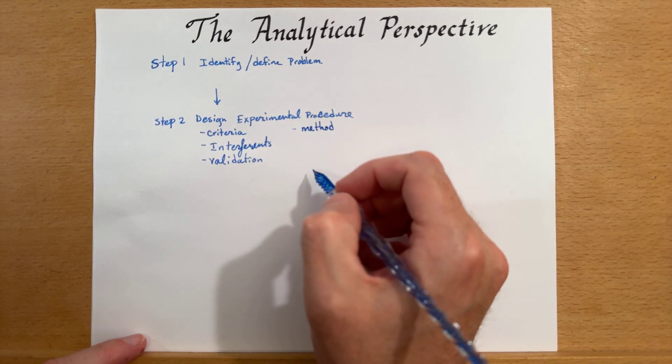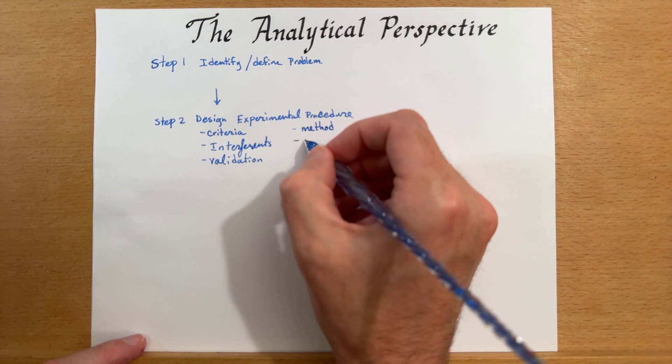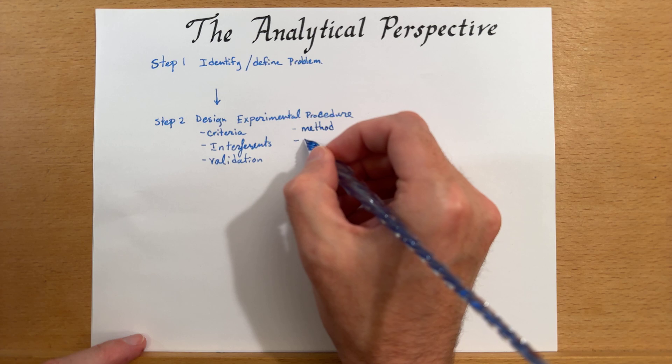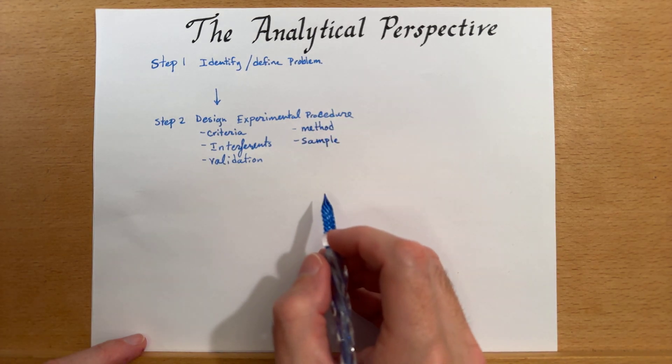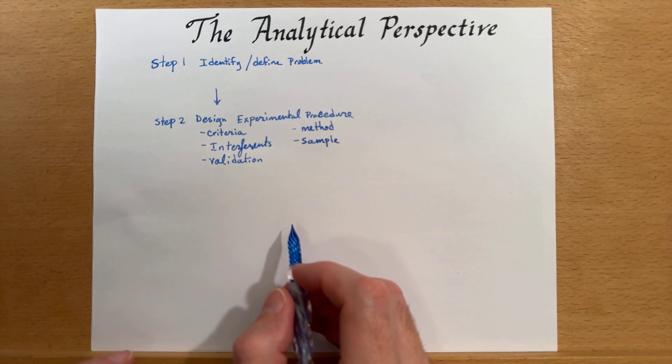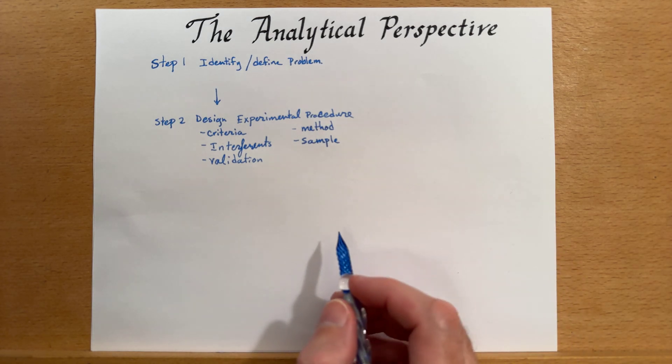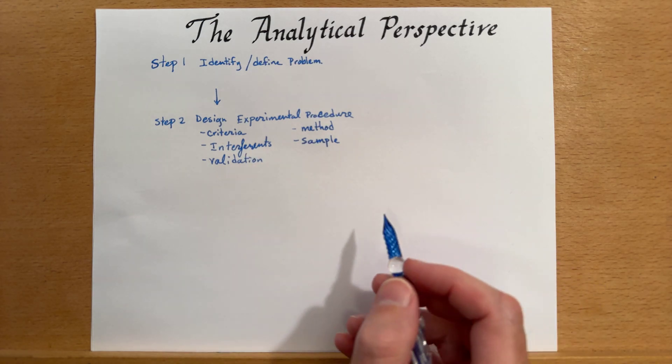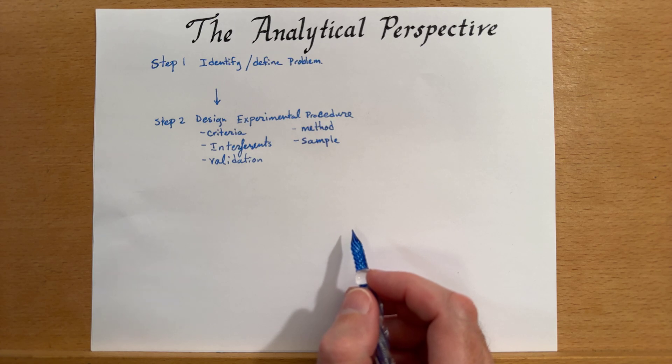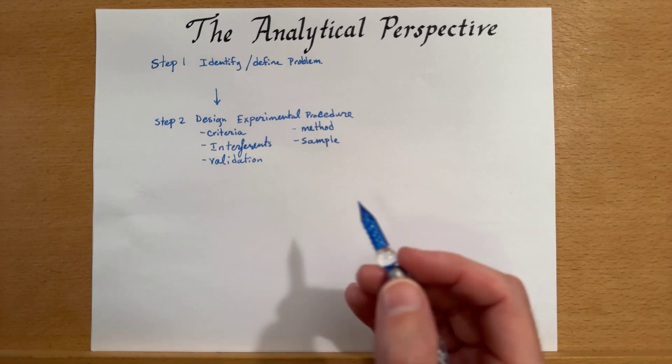We will have to come up with a method when we're designing our analytical procedure, and we'll have to think about how we're going to sample the material. Now for a lot of times, what you may have experienced is being given a sample that readily dissolves, and it doesn't have interference and other things in it, and is very easy to prepare. Perhaps the preparation is only a dilution step.